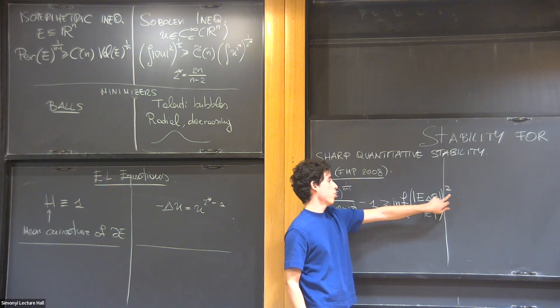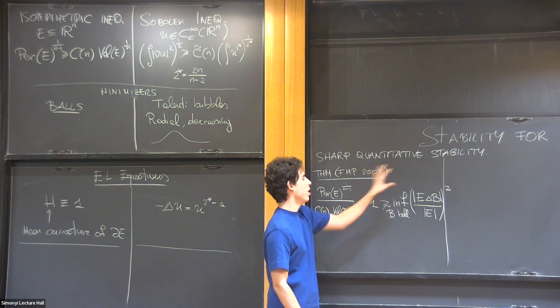And in fact, this is exactly the statement. So what I write here, it's a distance from the set of balls. So you take the infimum over all balls of this distance. An appropriate power. So this is sharp in the sense that this exponent cannot be improved. Here, this is the symmetric difference. So you are taking the measure of the symmetric difference. And of course, you can optimize over the ball.